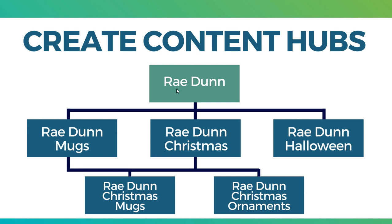In this example, I'm going to be using Ray Dunn. Ray Dunn makes a bunch of home products — things like mugs, canisters, plates, dishes, bowls, and dog bowls. What I want to do is rank higher for the main keyword Ray Dunn. I'm already ranking for this keyword, but my current position is not on the first couple of pages of search results. I'm going to show you exactly what I've done for this keyword to try to rank higher.